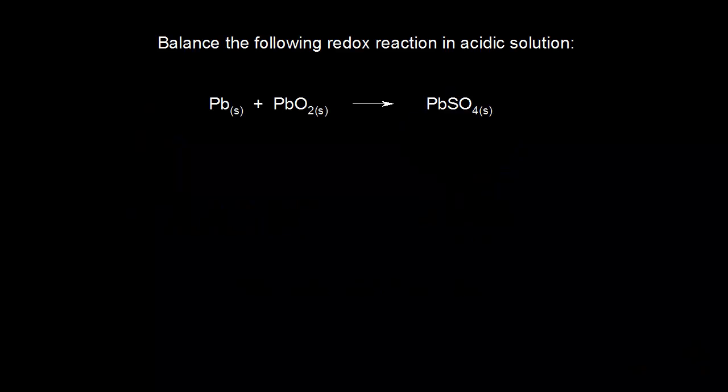Here's the reaction for a lead storage battery. Solid lead plus lead dioxide gives lead sulfate. Our goal is to balance this redox reaction in acidic solution. For a lead storage battery, you're dealing with sulfuric acid. In a previous video, I've already gone over how to balance a redox reaction in acidic solution, so this video is just a review of that one using the lead storage battery as an example.